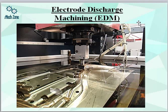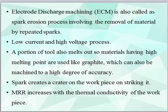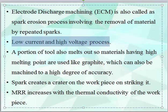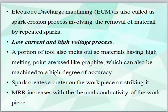Now we come to electro discharge machining, also called EDM. In the case of discharge, the voltage should be high and the current should be less. So the first and most important point of EDM is that it is a low current and high voltage process, whereas electrochemical machining was a low voltage and high current process.